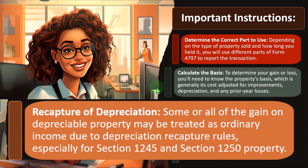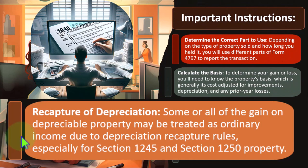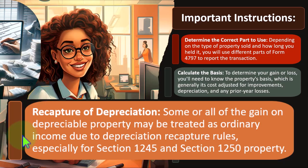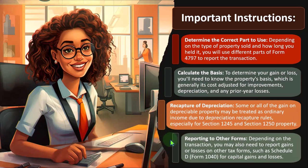Some or all of the gain on depreciable property may be treated as ordinary income due to depreciation recapture rules, especially for Section 1245 and Section 1250 property. If you sold equipment at a gain, that would lead you to believe that you over-depreciated it, because you were allowed to do so with accelerated depreciation, getting favorable tax rates on the deduction — resulting in the IRS wanting to recapture or tax the gain at those same ordinary income tax rates, as opposed to more favorable or lower tax rates.